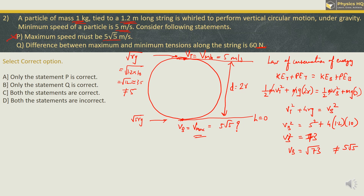Statement Q talks about the difference between tensions. Tension at the bottom minus tension at the top is given by the formula 6mg. Putting in the values: m is 1 and g is 10, so this equals 60 Newton. Therefore, statement Q is correct, and the correct option to select is option B — only statement Q is correct.